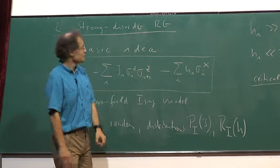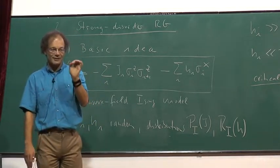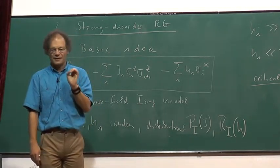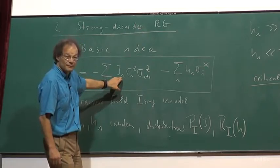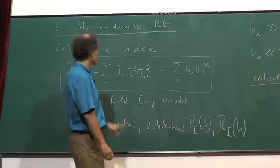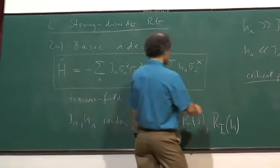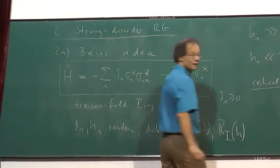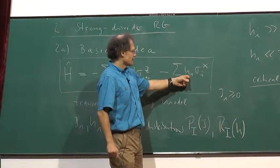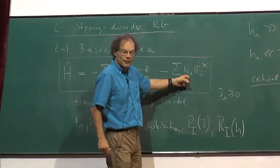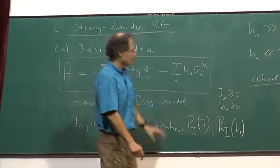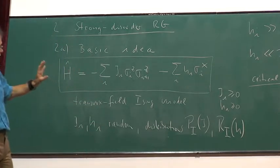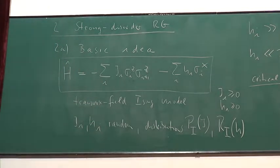Following our philosophy from yesterday, I want to look at random mass disorder, which means I want to make sure that the phases themselves are not influenced. So I take all the J's to still be ferromagnetic — the distribution is such that the J's are all positive — and I require the same for the H's. If I do this, I'm certain that my two bulk phases — ferromagnetic and paramagnet — are the same as in the clean case.